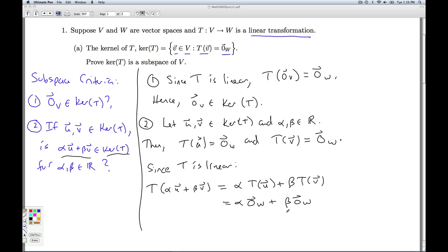We have a theorem about vector spaces that says any real number times a zero vector is the zero vector. And the zero vector, by definition, is the additive identity, so that plus itself is just that. What have we just shown? If I take T of alpha U plus beta V, I get the zero vector in W, which is exactly what I need to do to belong to this set.